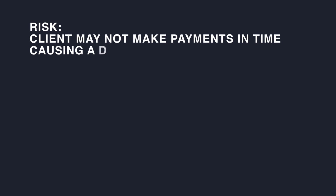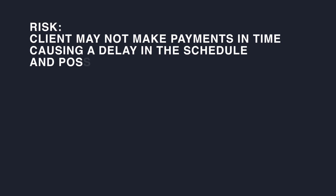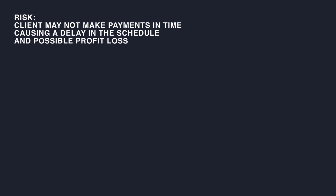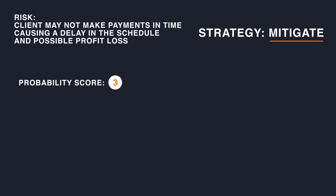Let's explore an example from our construction project and the risk of a client may not make payments in time, causing a delay in the schedule and possible profit loss. Let's assume that we chose to mitigate this risk, and we provided this risk with a probability score of 3 — may or may not occur — and an impact score of 4, significant. Based on our earlier discussion, we translate the probability score to a percentage of 50%.